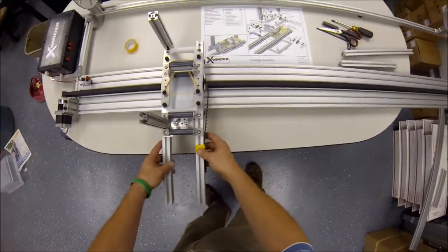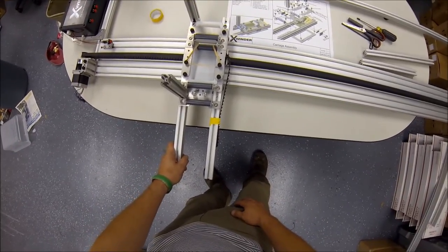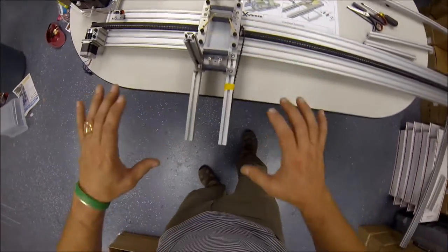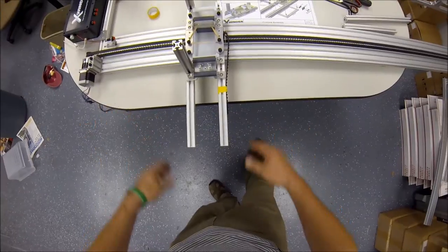So the carriage assembly is now mostly complete. What we'll install next is the delivery head and the rear holder, and we will be complete then with the carriage assembly.